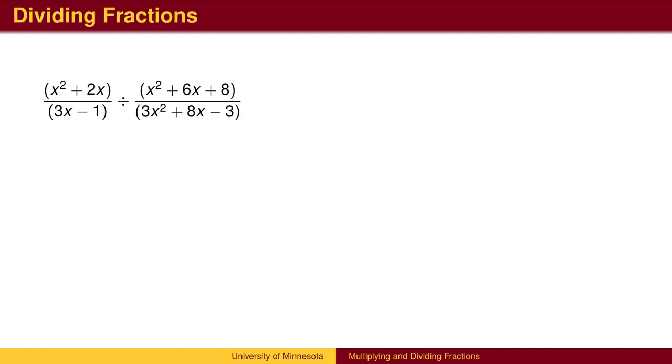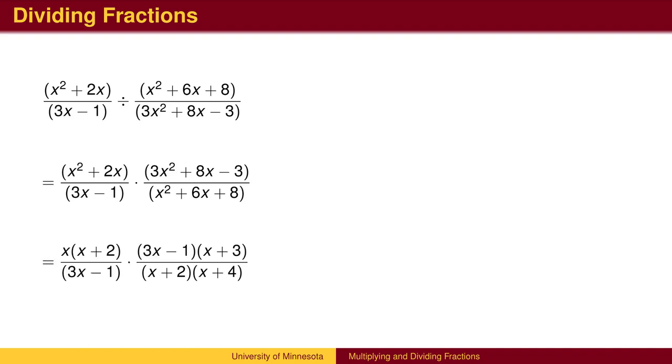To divide fractions, we multiply by the reciprocal. At this point, we have a standard multiplication problem. The next step is to factor. Once we have the factors, we cancel the common factors to arrive at the simplified answer.